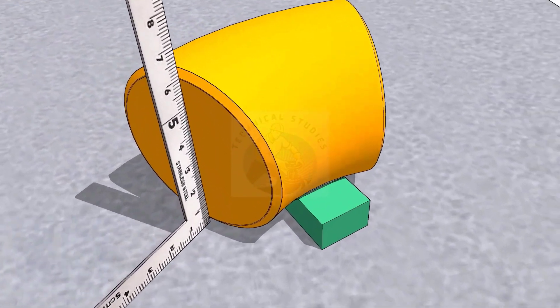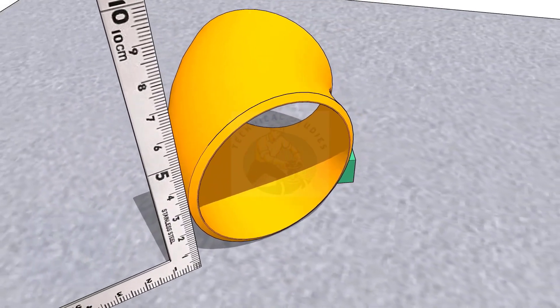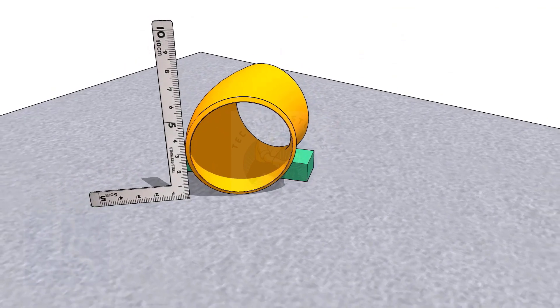Rotate the elbow until the face of the elbow is exactly square to the plate. Check on both ends. Put packing on both sides.